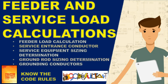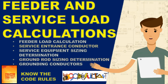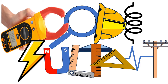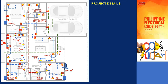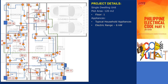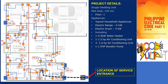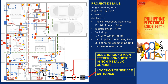To make it easier for you to comprehend, we will be continuing the project we discussed in my previous videos on how to calculate branch circuits in dwelling units. Our project sample is a dwelling unit that has a plot area of 120 square meters. It has typical household appliances including 1 6 kW electric range, 1 4 kW electric clothes dryer, 1 4.5 kW storage type water heater, 1 1.5 hp split type air conditioning unit, 3 1 hp room air conditioning units, and 1 1.5 hp booster pump.